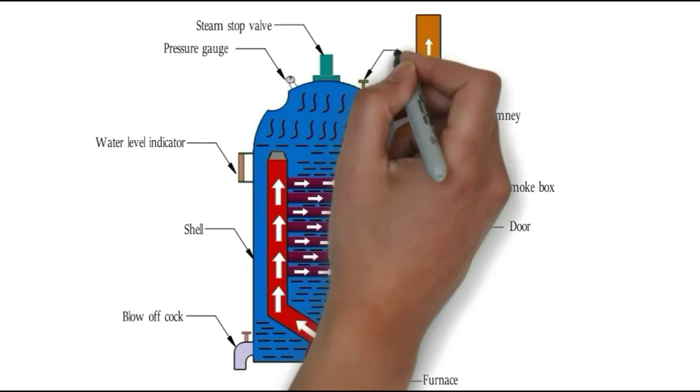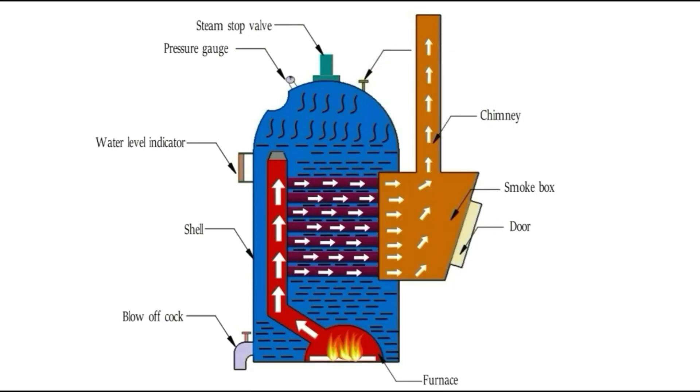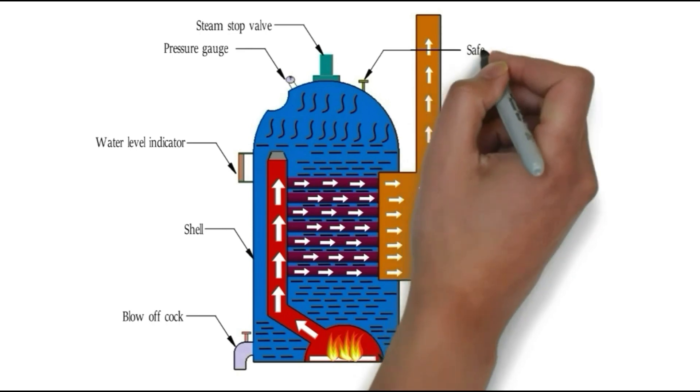The function of steam stop valve is to regulate the steam flow going through the boiler.